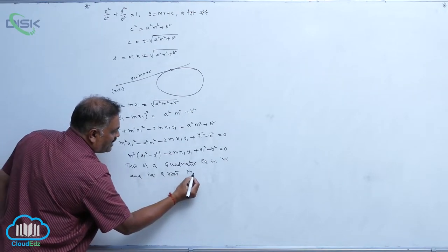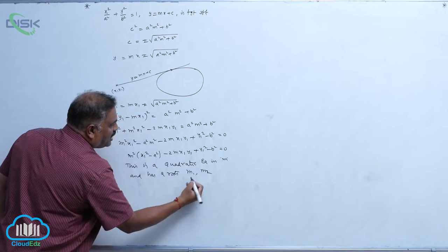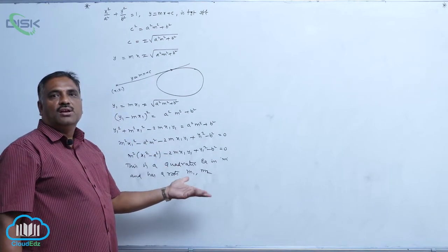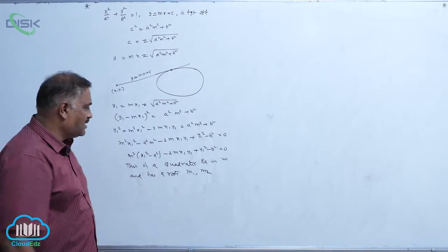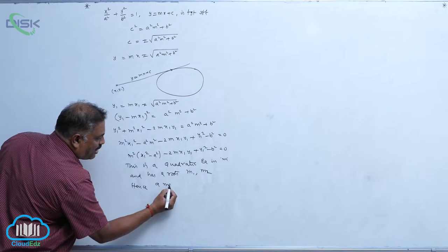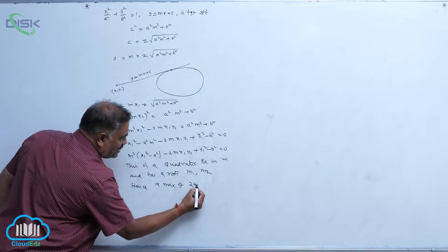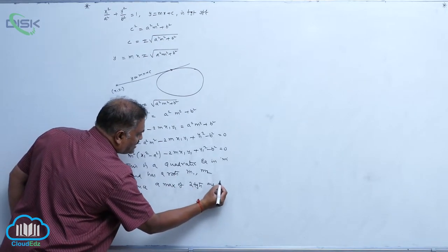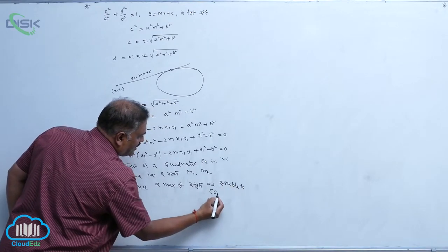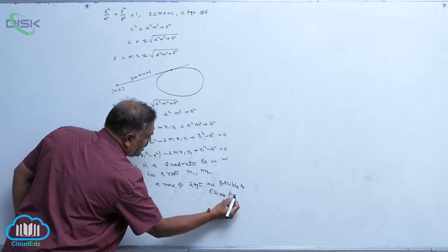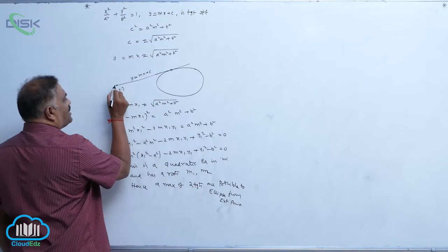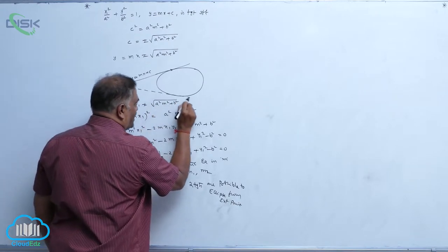This quadratic equation has two roots m₁ and m₂. Now m stands for slope, so m₁ and m₂ are slopes of two different lines. Hence a maximum of two tangents are possible to the ellipse from an external point — one tangent and another tangent like this.